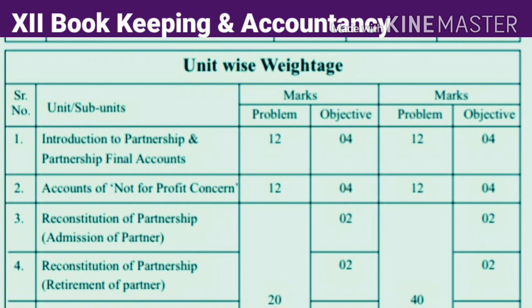Students, now let's see the unit-wise weightage. We have 10 chapters in our syllabus. Chapter number 1 is Introduction to Partnership and Partnership Final Accounts. This chapter is for 16 marks. On this topic, you will be asked a problem for 12 marks and objective for 4 marks. In this topic, you don't have an option.